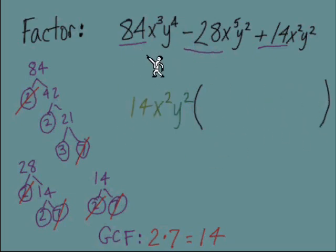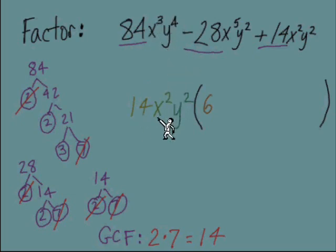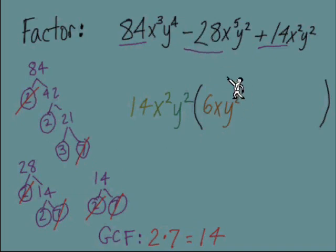We open the set of parentheses and think about what terms go inside so that distributing gives us the original trinomial. For the first term, divide 84x³y⁴ by 14x²y²: 84 divided by 14 is 6, x³ divided by x² leaves one x, and y⁴ divided by y² leaves y². So the first term inside is 6xy². If you're using factor trees, the leftover factors from 84 are 2 and 3, and 2 times 3 is 6.